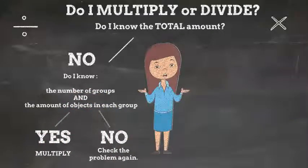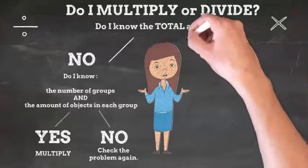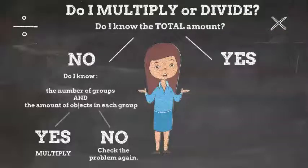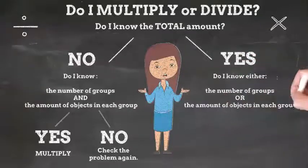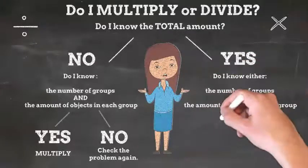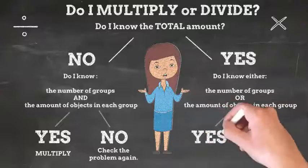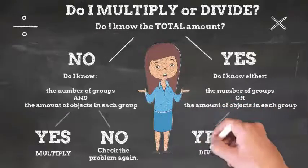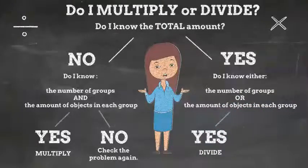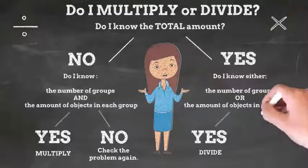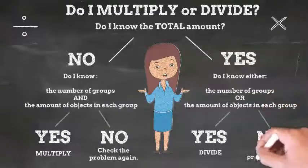Multiplication is always warranted when you know the number of groups and the amount of objects in each group. And if you ask yourself if you know the total amount and your answer is yes, then ask yourself, do I know either the number of groups or the amount of objects in each group? And if your fabulous self says yes, then divide. Division is always warranted when you already know the total and either the number of groups or the amount of objects in each group. If you don't know either of those, check your problem again.